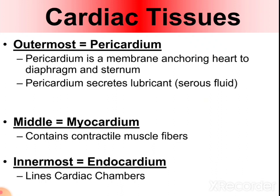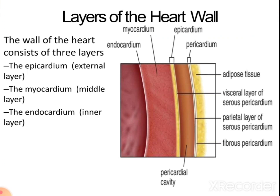The middle layer is the myocardium, which contains the contractile cardiac muscle fibers. The innermost layer is the endocardium, which lines the cardiac chambers. So the three layers of the heart wall from outside to inside are: epicardium, myocardium, and endocardium.